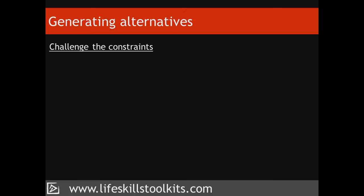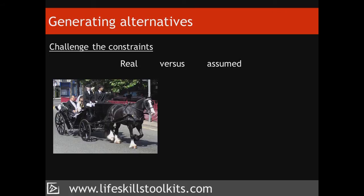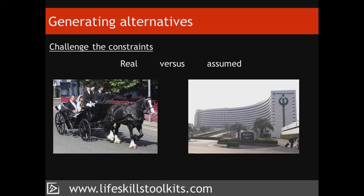Second, challenge constraints. Challenge the constraints that limit your alternatives by identifying the real constraints versus the assumed ones. For example, if you were making a decision about your wedding day, a real constraint would be the date already booked, while an assumed constraint is that the reception should take place in a hotel. Until you've booked a function room, you've created a mental constraint limiting yourself when other alternatives are available. Assumed constraints are often rooted in habit or tradition. Ask yourself: do things have to be or work this way?